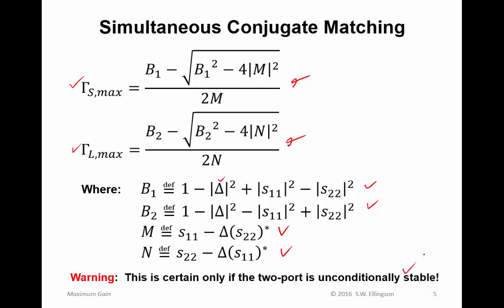Once I know those four parameters, I can plug them into these equations, and that will give me the values of gamma_S and gamma_L that maximize the transducer power gain. And once again, this is certain only if the two-port is unconditionally stable. If it's not, you can try this, but you need to check at the end to make sure that the result will be stable.